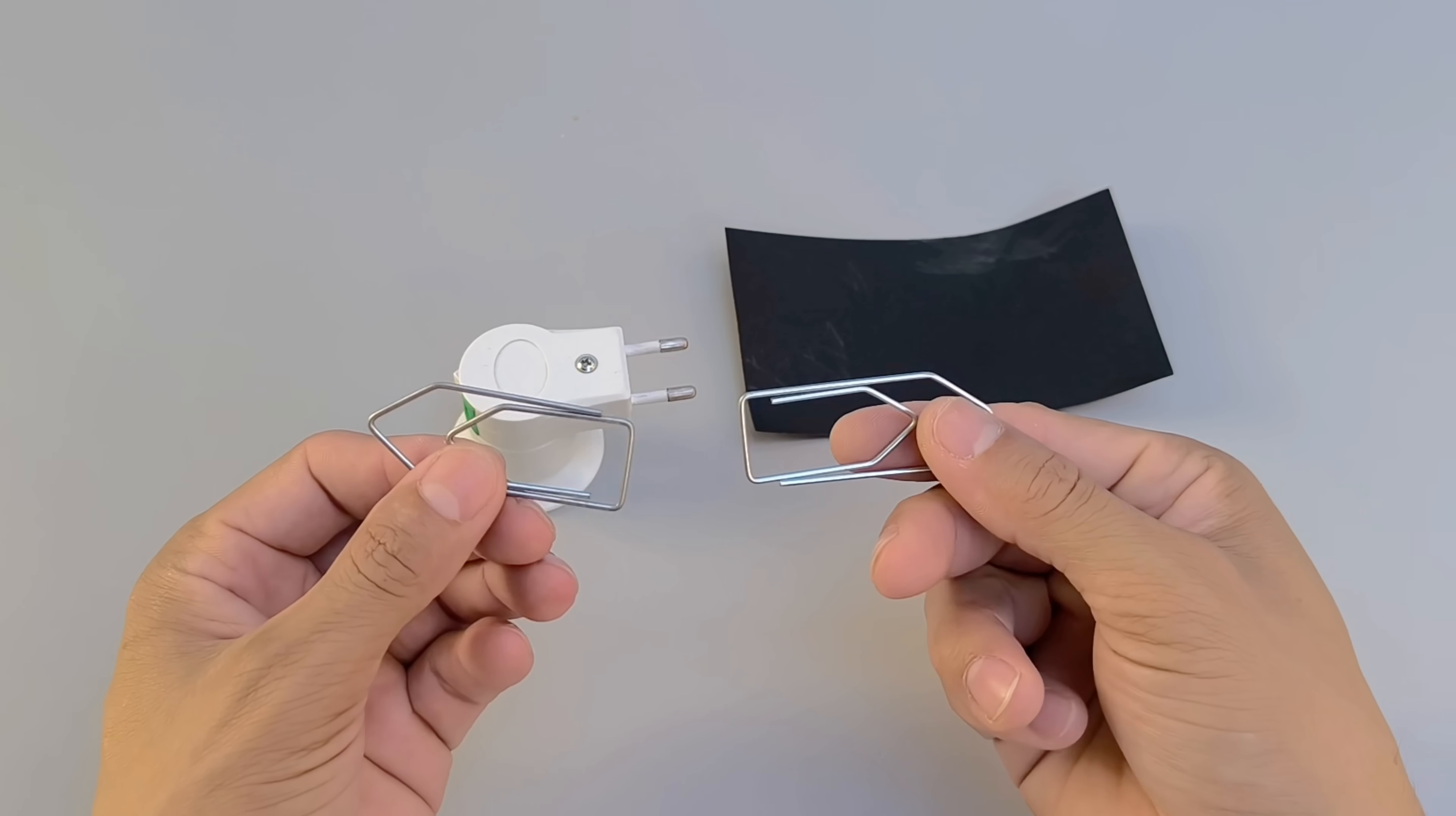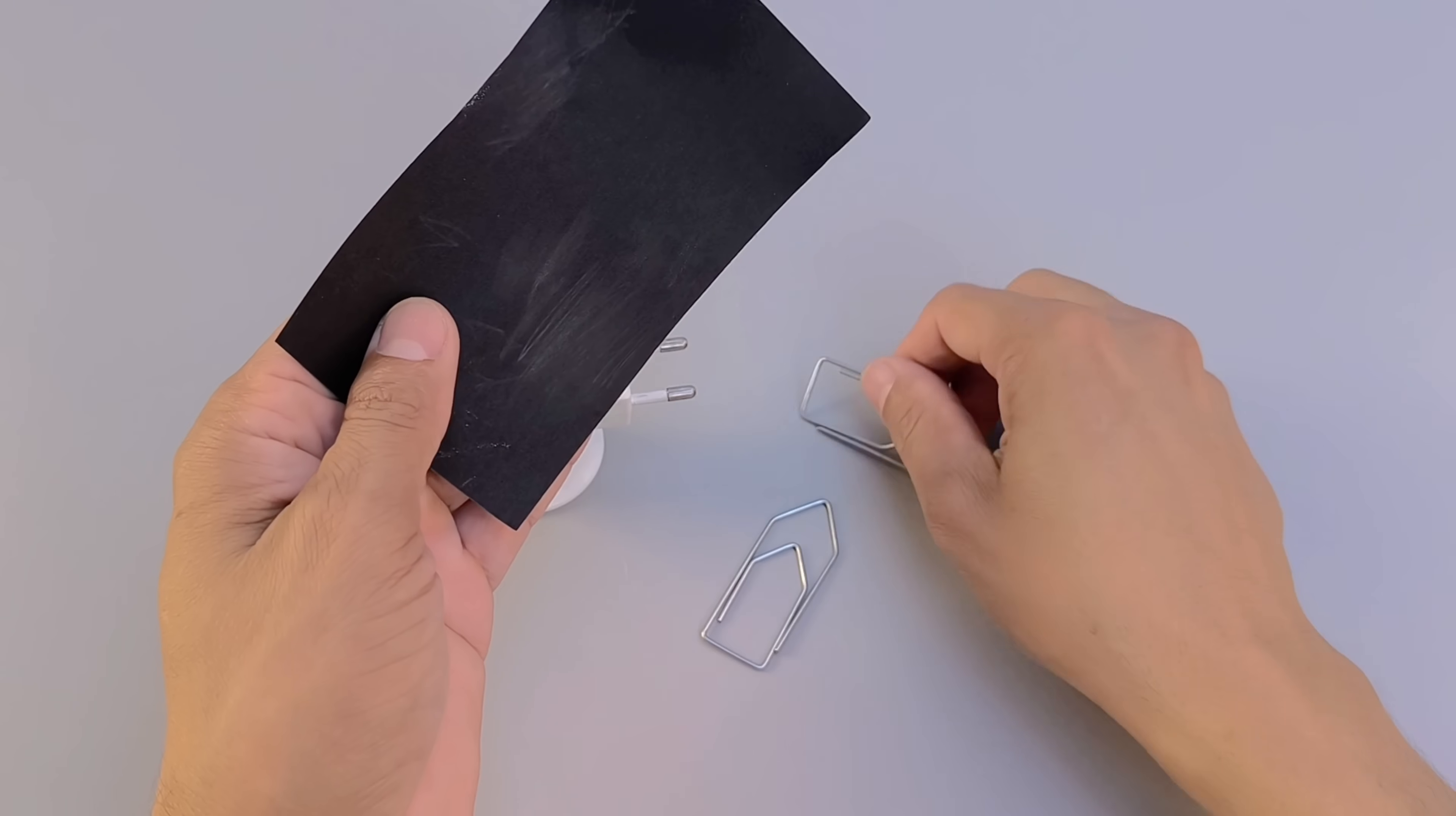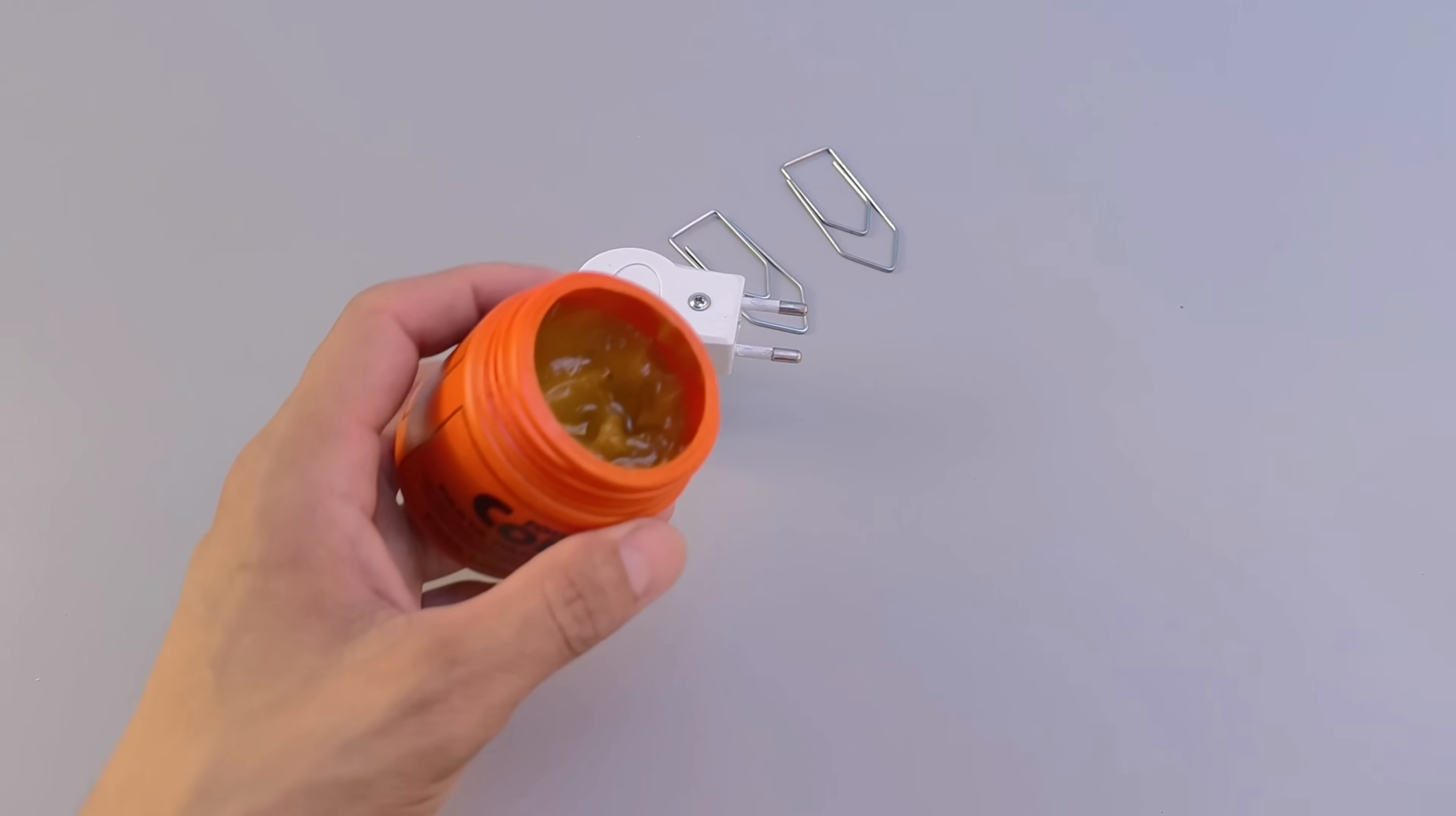Now, gather two paper clips, preferably size 8, which are more robust and easier to handle. Using fine sandpaper, sand the ends of the paper clips at the points where the soldering will be done. This step is essential to remove any layer of varnish or dirt, making it easier for the solder to adhere and ensuring reliable electrical contact.